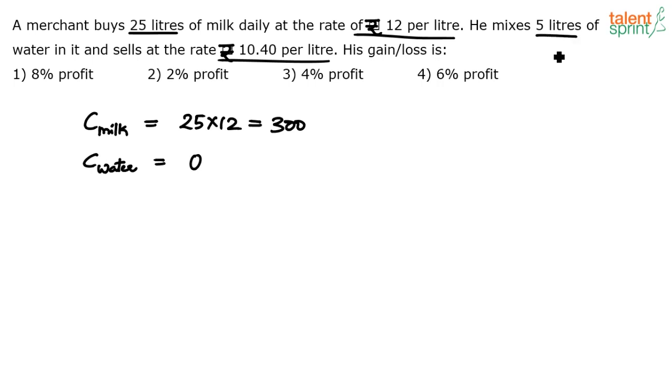He mixes 5 liters of water in it, which is at zero cost. So the total cost of mixture—milk and water—is how much? ₹300 plus 0, which is ₹300. For how many liters? Remember, 25 + 5 liters. While the cost is zero, the quantity has increased to 30 liters.